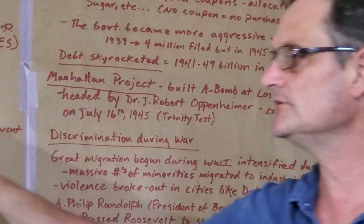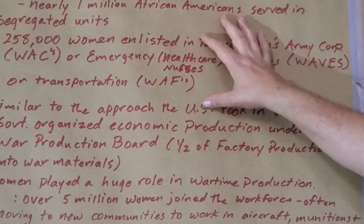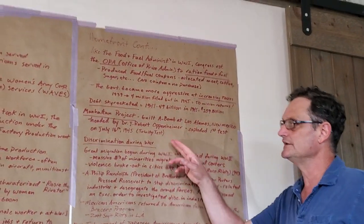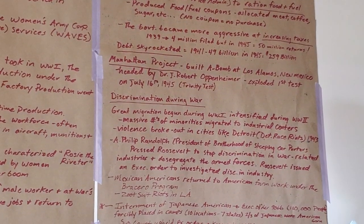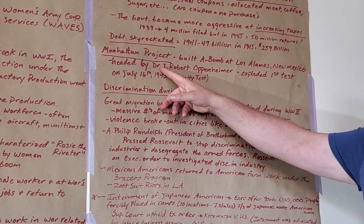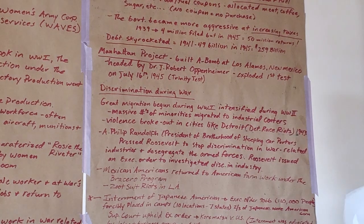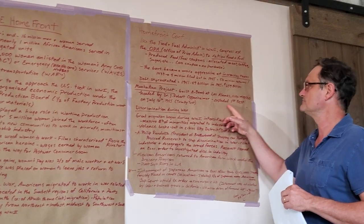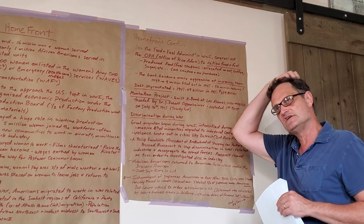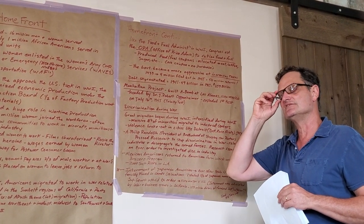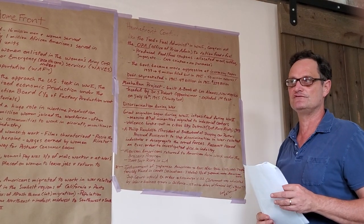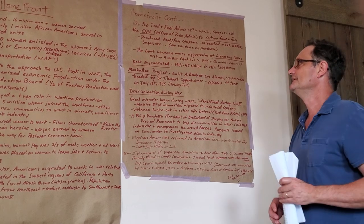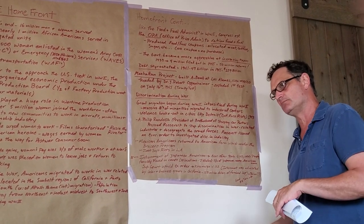Don't forget the role of women as Rosie the Riveter, in the military, and internal migration to Sun Belt regions. On science — here's a real good example of where science has gone mad — it's called the Manhattan Project. They built the A-bomb at the Los Alamos, New Mexico site, where they assembled the bomb. The first test was called the Trinity Test, exploded on July 16, 1945. The original reason they started the Manhattan Project was because Einstein had warned Roosevelt that Germany was working on fission. Next lecture we'll talk about the use of the bomb at Hiroshima and Nagasaki.